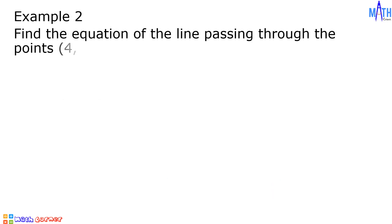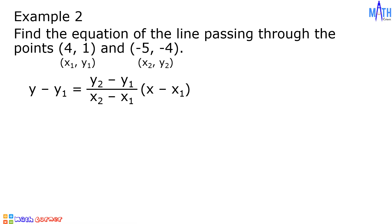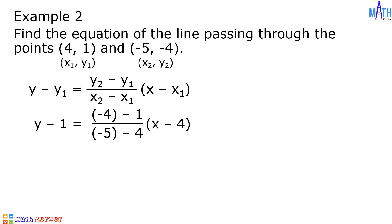Example number 2: let us find the equation of the line passing through the points 4, 1 and negative 5, negative 4. Let us consider 4, 1 as x sub 1, y sub 1 and negative 5, negative 4 as x sub 2, y sub 2. Let us substitute these given values in the two-point form of the equation of the line. y minus y sub 1 becomes y minus 1 equals y sub 2 minus y sub 1 becomes negative 4 minus 1 over x sub 2 minus x sub 1 becomes negative 5 minus 4 times quantity x minus x sub 1 becomes x minus 4. Let us simplify.